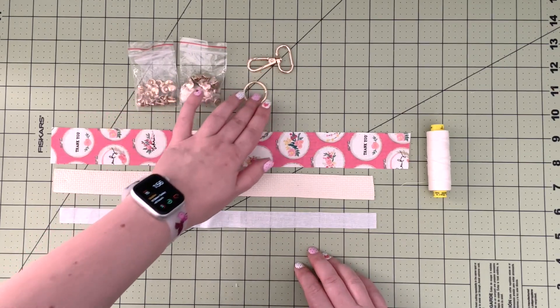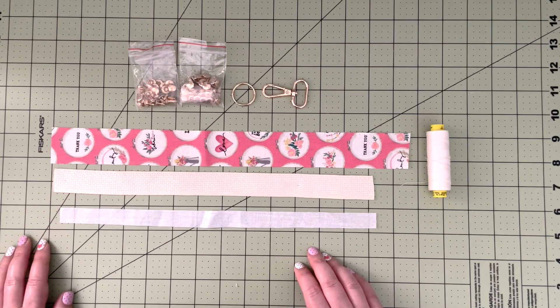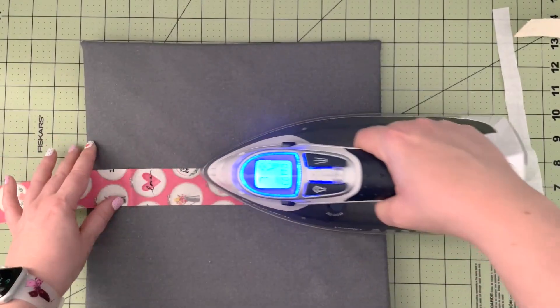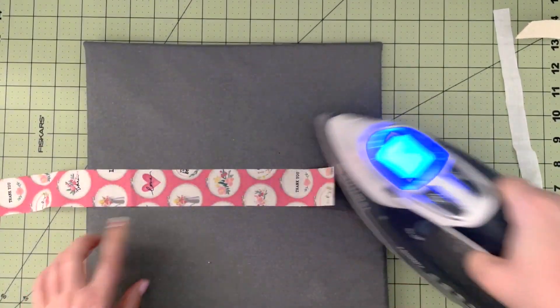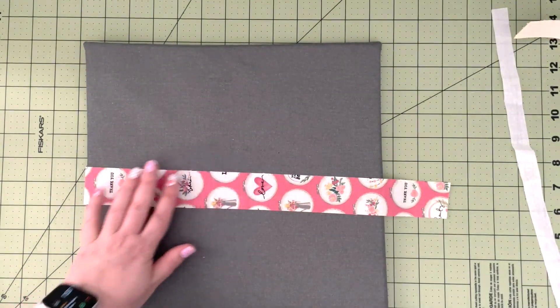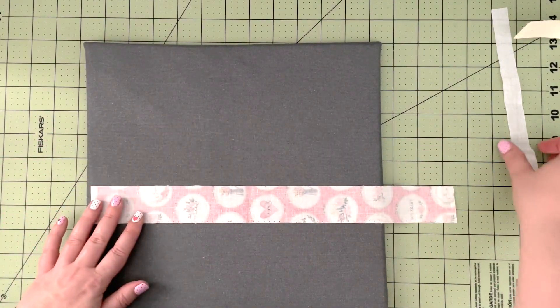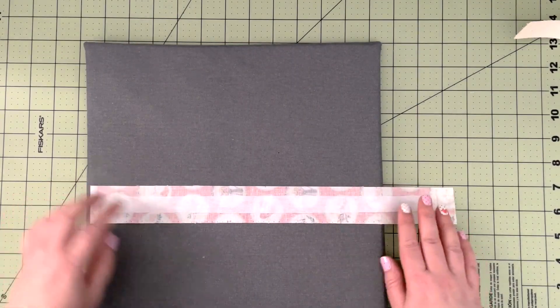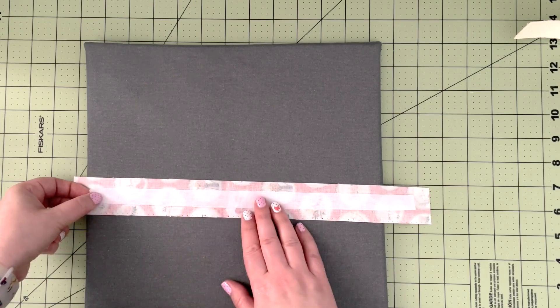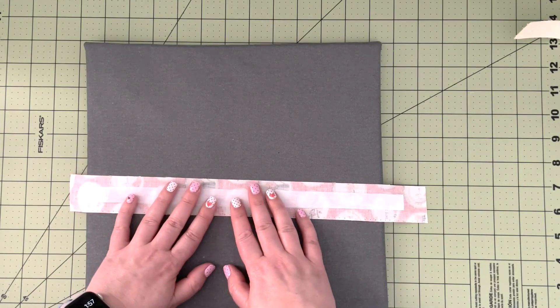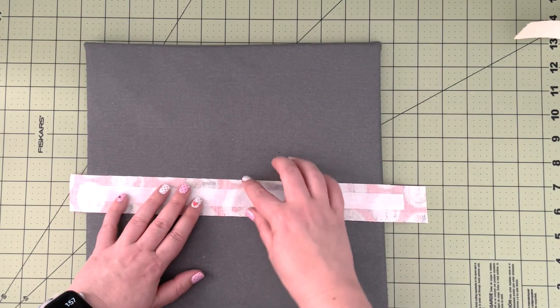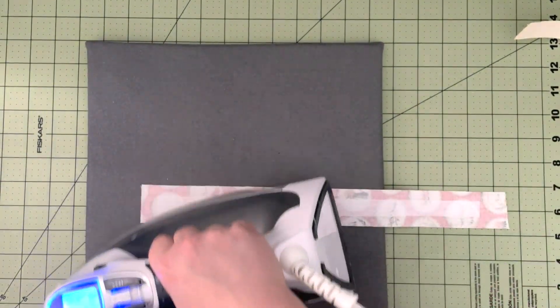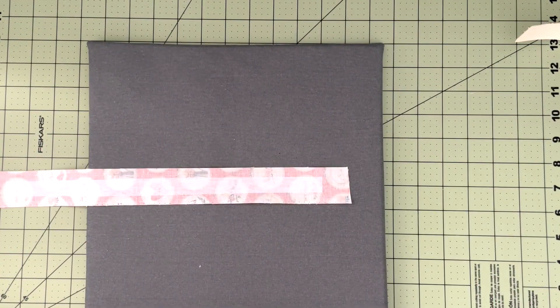To start our project we will fuse the interfacing onto our cotton strip. You can prep your fabric to make sure it's nice and straight. On the wrong side of the fabric in the middle, you're going to center your interfacing so there's a little space left on each side of the fabric on the short ends, and it's placed in the middle so you have about equal overhang of the fabric on each side.